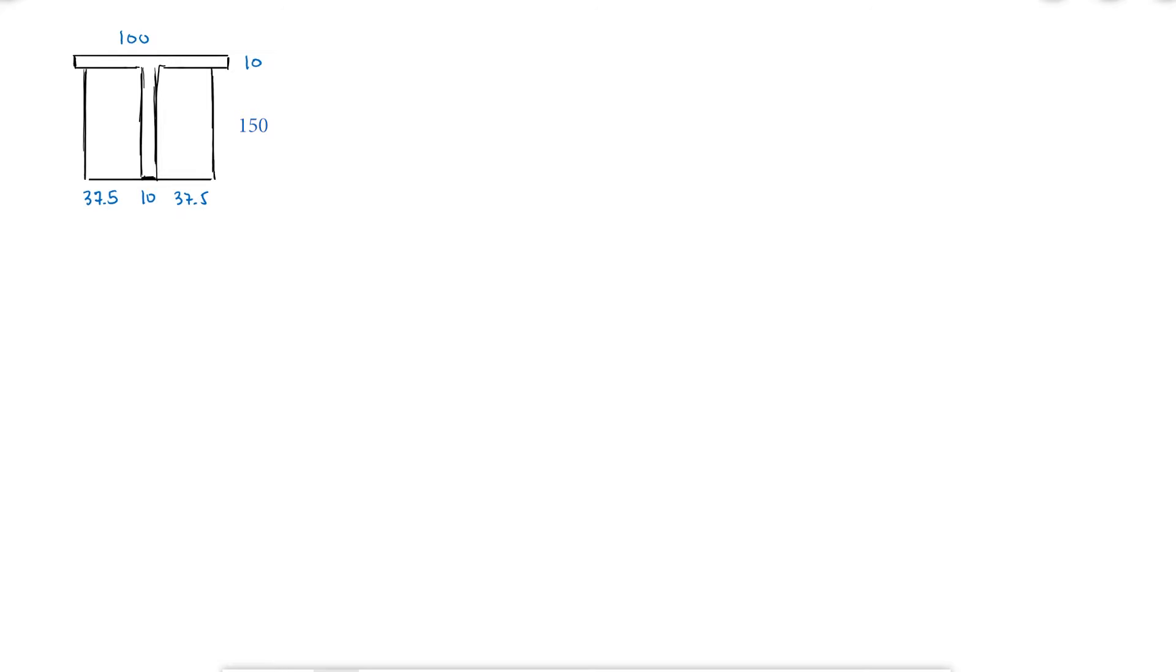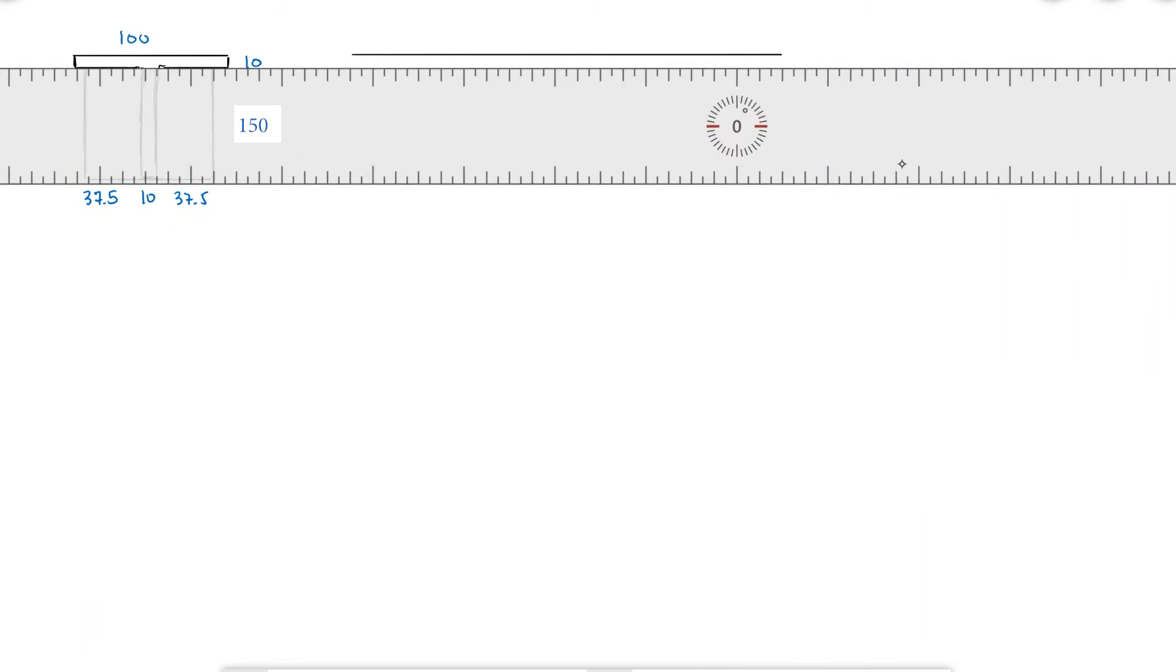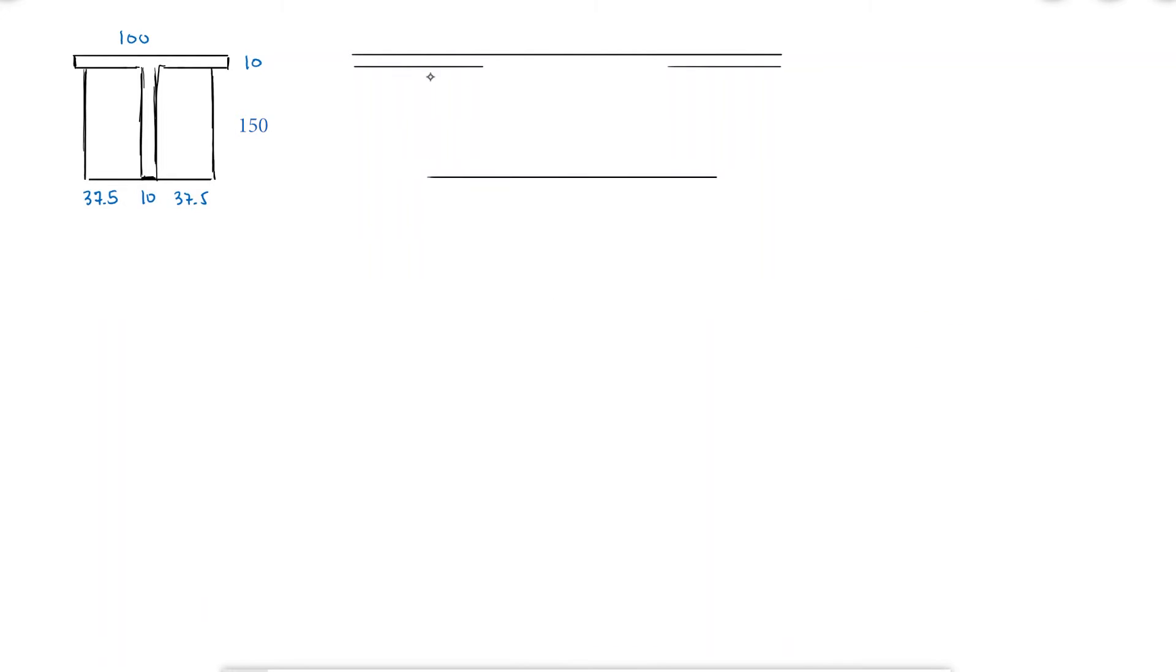To find the neutral axis or the centroid of this cross section area, we need to find the transformed section made of only one of the two materials. So in this case, I'm going to transform the steel into wood. Because of the given elastic moduli, I know that the new dimensions of the steel, that is now wood, would be 16 times wider. Notice that the dimensions of the wood have not changed.